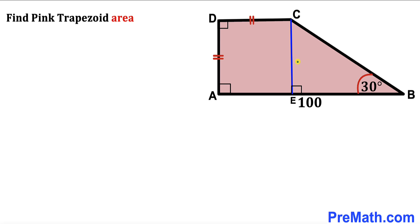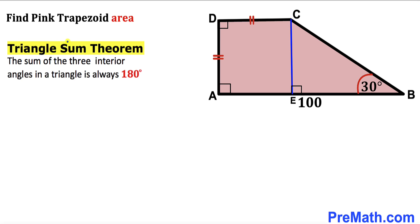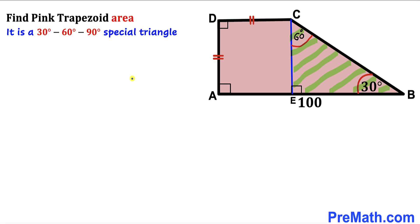In this next step I have dropped this perpendicular CE on line AB, and as a result we got this square AECD and the right triangle CEB on the other side. Now let's recall the triangle sum theorem: the sum of three interior angles in a triangle is always 180 degrees. In triangle BEC, this angle is 30 degrees and this angle is 90 degrees, so therefore this angle has got to be 60 degrees. We conclude that triangle BEC is a 30-60-90 special triangle.